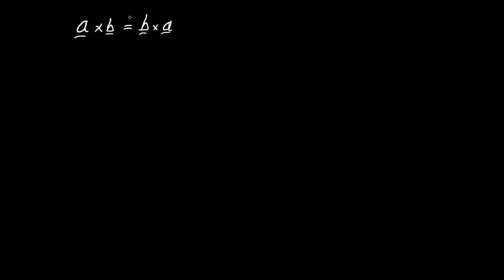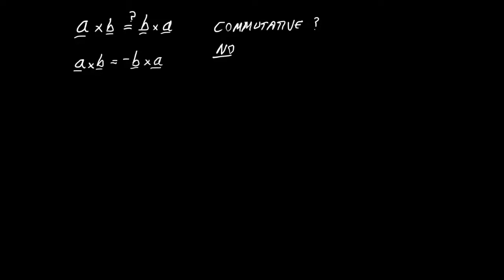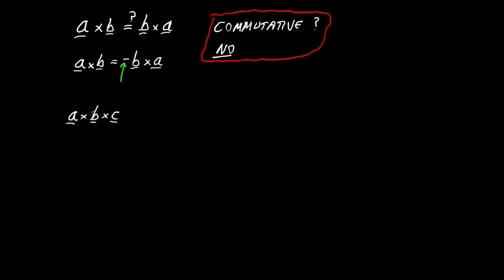Let's wrap up by asking whether the cross product has the commutative property: is a cross b equal to b cross a? It is not. Unlike the dot product and addition, the cross product is not commutative — swapping the order of a and b simply introduces a minus sign. How about the associative property — is (a cross b) cross c the same as a cross (b cross c)? The answer is no. The cross product does not have the associative property, so the order in which you do cross products of three vectors does matter.